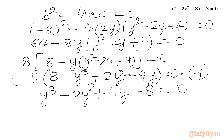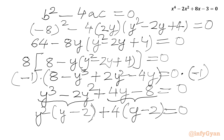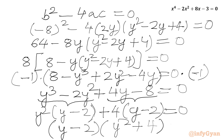This is a cubic equation and we can use the method of factorization. From the first two terms we take y² as common, giving y²(y - 2). From the last two terms we take 4 as common, giving 4(y - 2). So (y - 2) is the overall common factor, and we write (y - 2)(y² + 4) = 0.